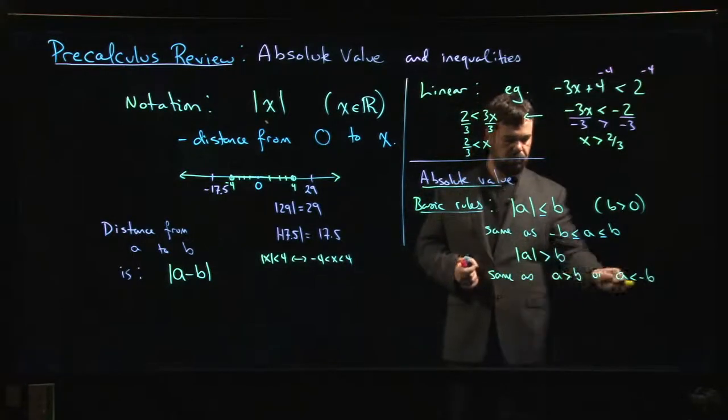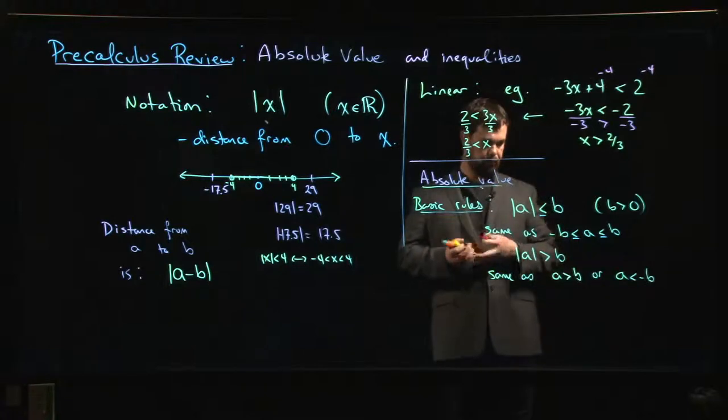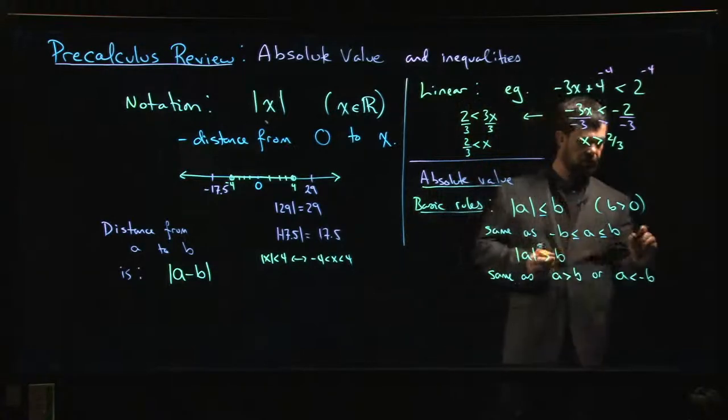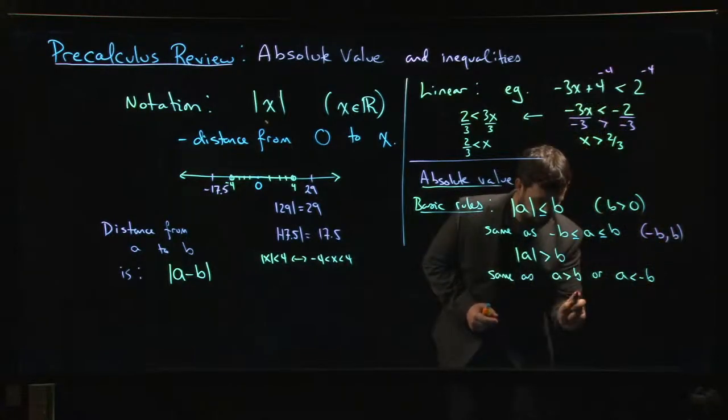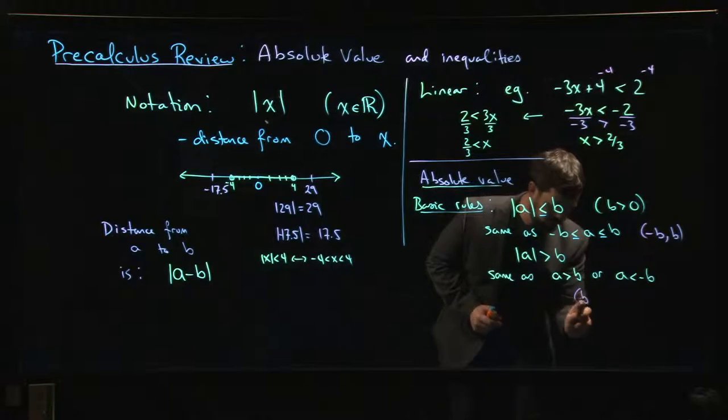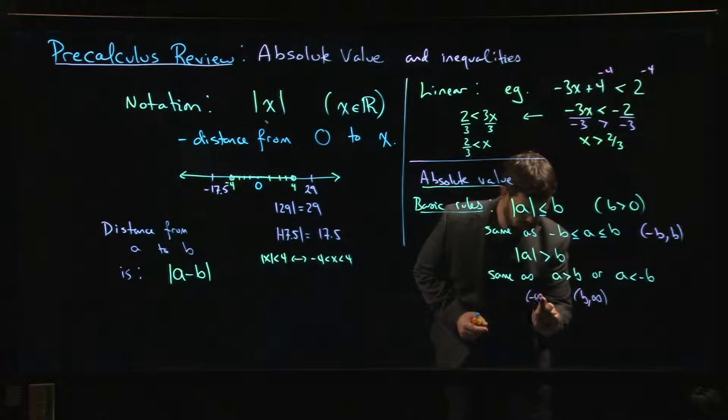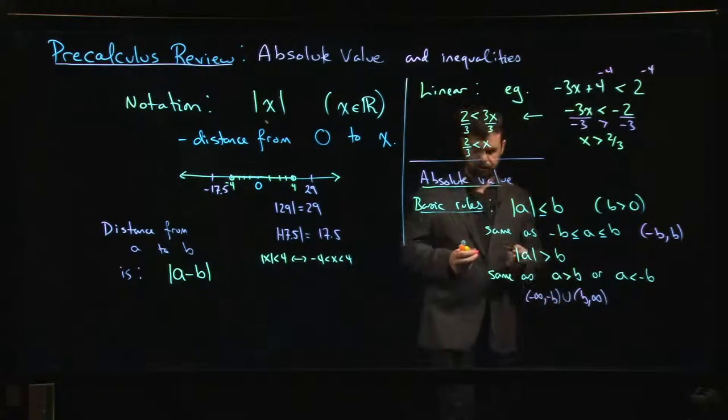And again, if you have equals there. In terms of intervals, that means that you're doing, here you'd be going from minus b to b. Here, this is one of these places where you need union. This is going to be from b to infinity, but also from minus infinity to minus b.